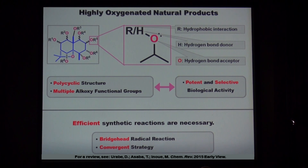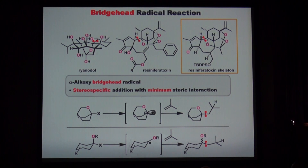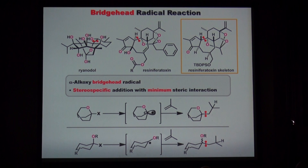And of course, from synthetic chemists' point of view, these complex structures serve as an excellent platform for development of efficient new synthetic methodology and strategies. Today, my talk will focus on one single reaction and its application to a convergent strategy. If you look at these molecules carefully, you will often find a very hindered bond within the carbocycle, which directly connects to a tetrasubstituted carbon here or here. The construction of this hindered bond is one of the most challenging parts for the total synthesis of these compounds.